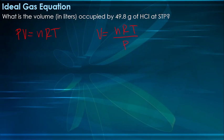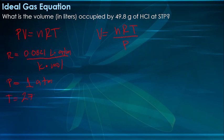We already have the gas constant, which is equal to 0.0821 liters times atm over Kelvin times mole. Since it is STP, the standard pressure is equal to 1 atm, and the standard temperature is 0 degrees Celsius or 273.15 Kelvin.